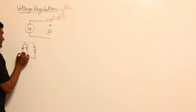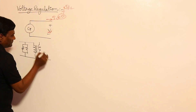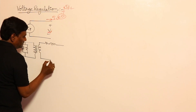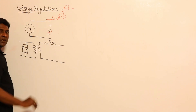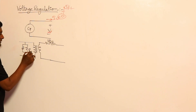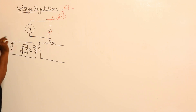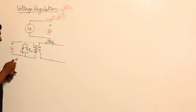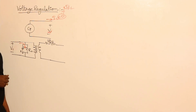Let me refer to the approximate equivalent circuit with total leakage impedance referred to secondary. This is ZE — RE plus jXE — and this is R₀ and X₀, which is the shunt branch connected across the voltage source V1. Now, V1 is an infinite source, so even if it draws no-load current, there will be no voltage variation at V1 — its amplitude and frequency cannot be changed.